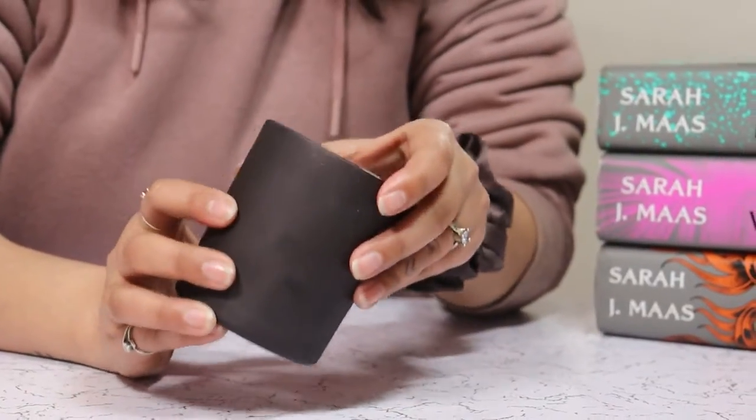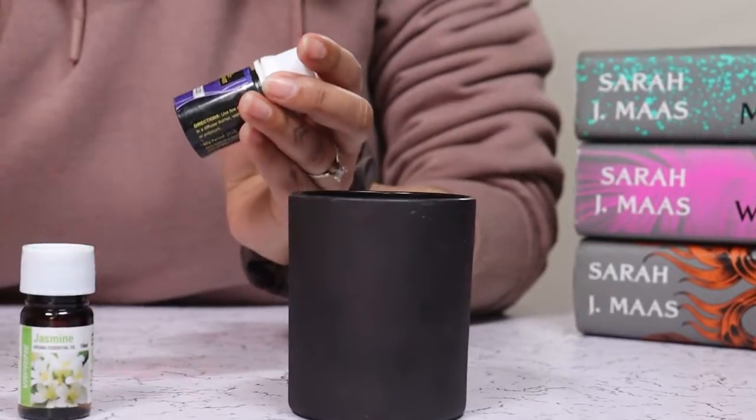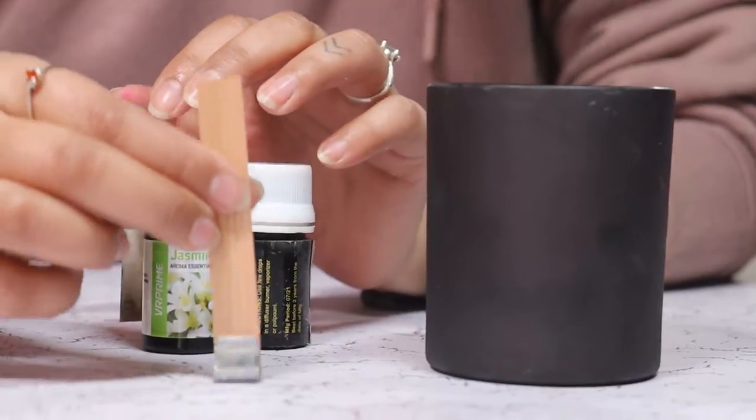For this Rhysand candle, I'm using a black container, jasmine, sea breeze, cedar smells, and a wood wick.